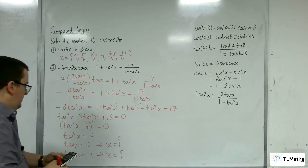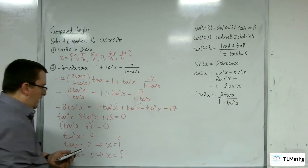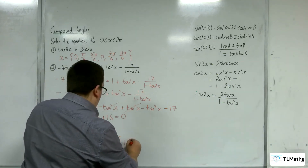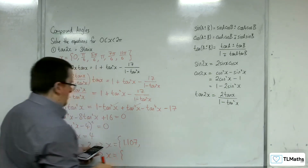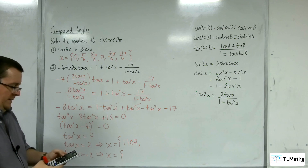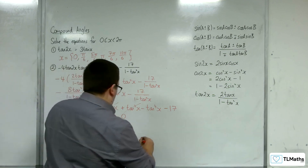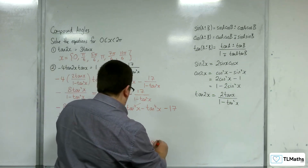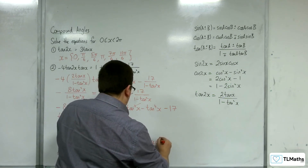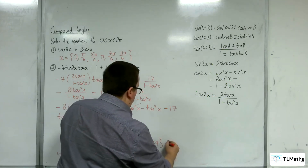If I do inverse tan of 2, I get 1.107 to 3 decimal places. Add pi to that, I get 4.249. Add pi to that, I'm outside the range.